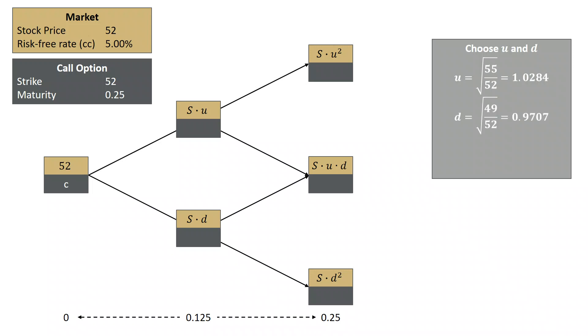We're going to choose D similarly equal to square root of 49 over 52, or 0.9707. And we can find P now: e to the R - R is 5%, delta T is 0.125 - minus D over U minus D is 61.65%, and 1 minus P is 38.35%.